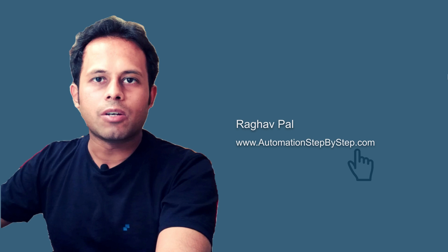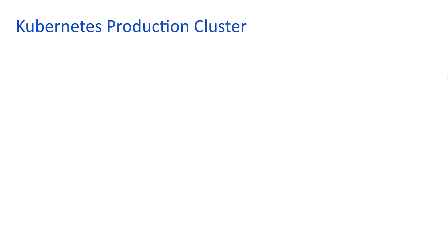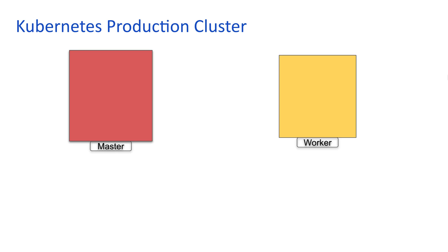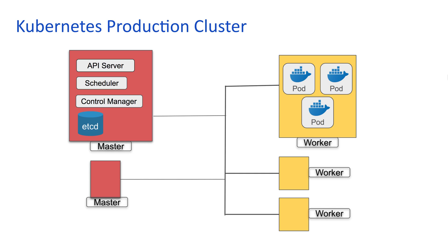Hello and welcome to this session. I'm Raghav and you can find all my work on my website automationstepbystep.com. In this session we are going to go very basic step by step and we will learn what is Minikube and why is it used. When we use Kubernetes in production, we have master and worker nodes. We can have one or more masters and we can have multiple worker nodes, and the master controls and manages the workers. We have already seen this in the Kubernetes architecture videos.